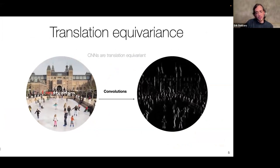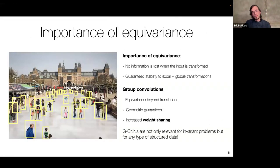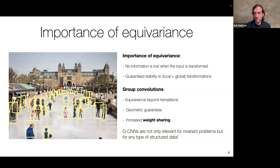Computer vision made a huge leap forward with convolutional neural networks, precisely because of equivariance: if the input translates, the output translates accordingly, allowing weight sharing. Equivariance means no information is lost when the input is transformed — it's just moved to different locations in space. If we stick to this principle, we preserve the structure of data, so an image remains image-type and we can keep doing convolutions. With group convolutions, we generalize translation equivariance to other symmetries, weight-sharing not only over positions but also over rotations.